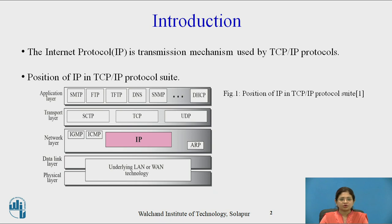Starting from the bottom: physical layer, data link layer, network layer, transport layer, and the topmost layer is application layer. In this protocol suite, physical layer and data link layer deal with the LAN or WAN technology. Network layer contains IGMP, ICMP, IP protocol, and ARP protocol.